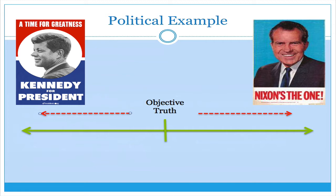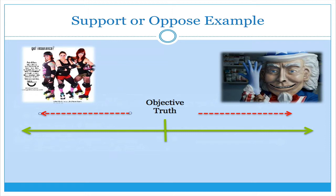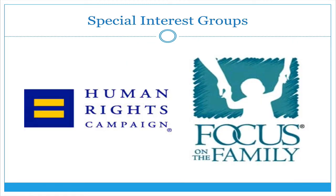For example, we could look at political examples. Here we have political posters from the 1960 election. Clearly, the poster on the left is very biased for a certain candidate, and the poster on the right is clearly biased for another political candidate. Perhaps it's an idea like Obamacare or the Affordable Care Act — we could see commercials that are very supportive, saying this is a great idea, and at the same time commercials that are very anti-Affordable Care Act. Special interest groups can also have contrasting biases. The Human Rights Campaign is going to be seen as a more liberal leaning special interest group, contrasting with Focus on the Family, a more conservative leaning special interest group.